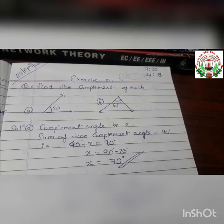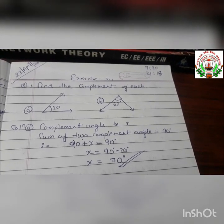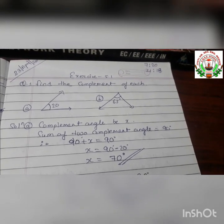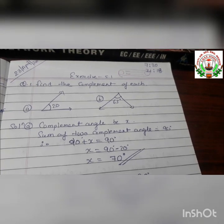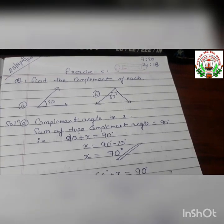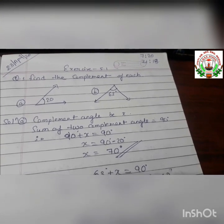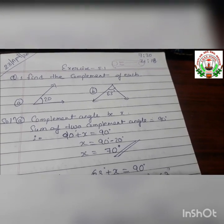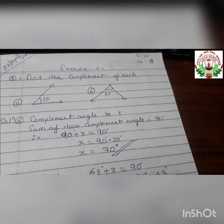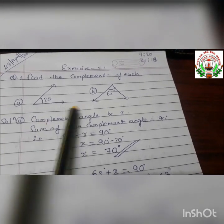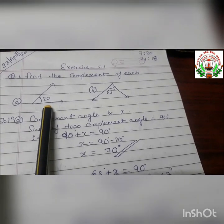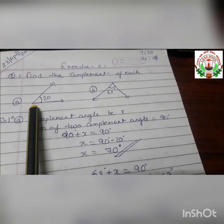Good morning to everyone. Today we are going to deal with exercise 5.1. Here is the first question: find the complement of each. For part A, the first complement angle is given as 20 degrees.